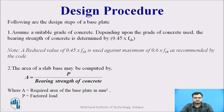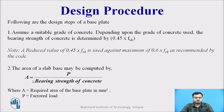We'll take an overview of the steps — you can find all these steps in my previous videos also. First of all, we'll assume our grade of concrete, then we'll find out the bearing strength of concrete which is equal to 0.45 fck. We get the bearing strength value, then we get the area which is equal to P divided by the bearing strength of concrete, giving us the required area.